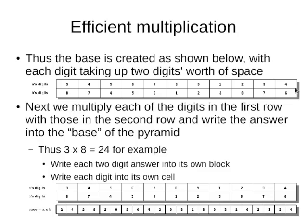There's the first number: 3, 4, 5, 6, 7, 8, 9, 1, 2, 3, 4, and the second number — and note that each of these digits occupy two digits' width of space.